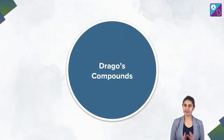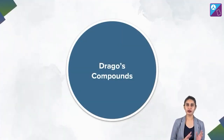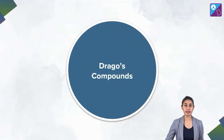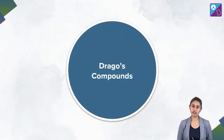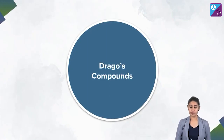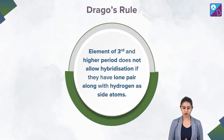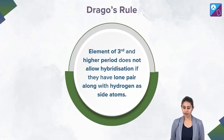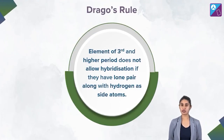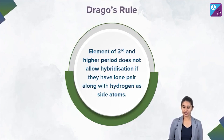It's very simple, it's super simple, nothing complicated about it. All we need to do is just look at the rule and see what the rule says. Drago's rule says in simple terms that an element of the third and higher period does not allow hybridization if it has a lone pair along with hydrogen as a side atom.